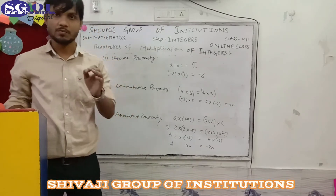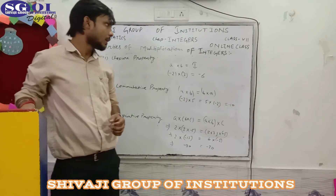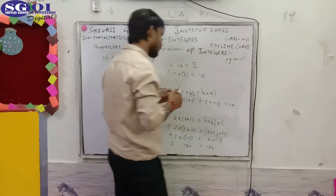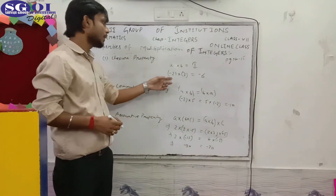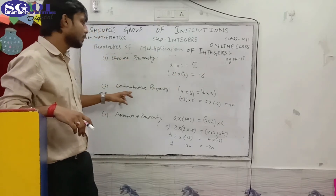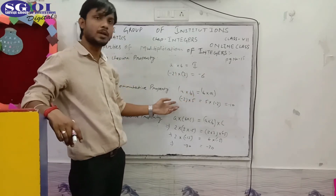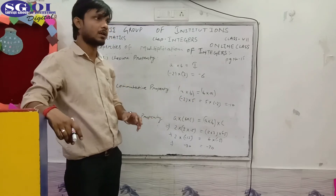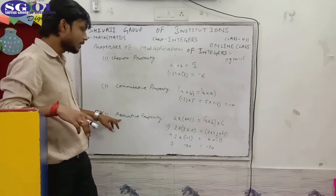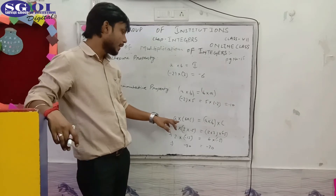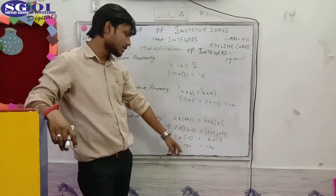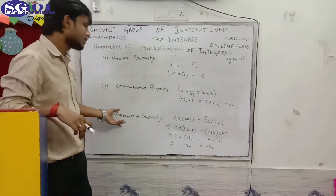You can see these properties in your book at page number 15. So first is closure property, second is commutative. In closure property, a × b equals an integer. Commutative: a × b = b × a — the order doesn't matter. In associative property, you take three integers, associate them differently, and the product is the same on both sides.